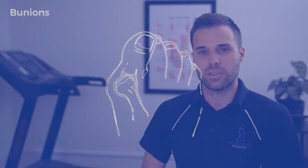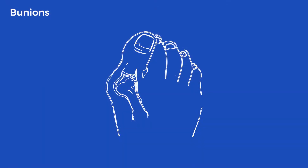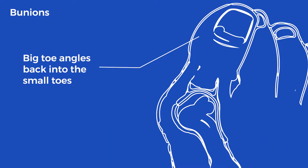Bunions are a fairly common condition that occurs in the first metatarsal phalangeal joint. The bunion itself is the bump that grows on the side of the big toe, whereas the hallux abducto valgus, which is the actual proper deformity, is where the metatarsal angles away from the foot and then the phalanxes of the toe angle back towards the lesser toes.